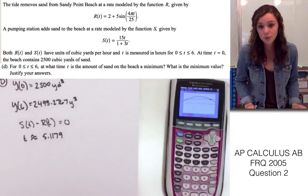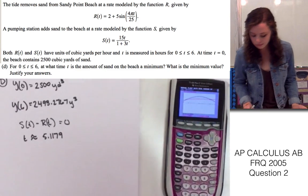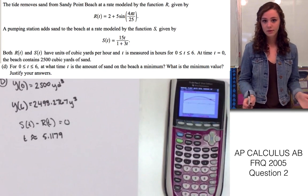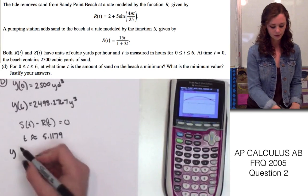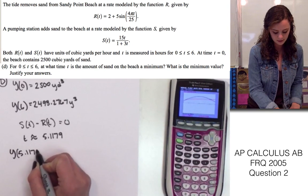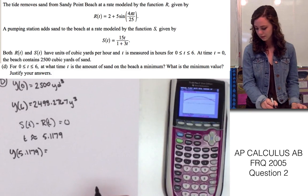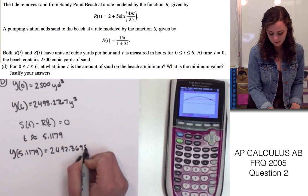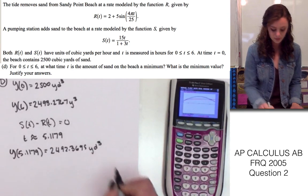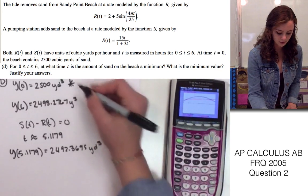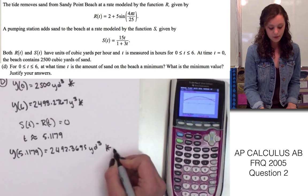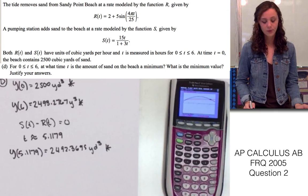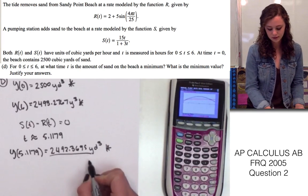When we look at the graph, we see that there's only one point of intersection. It looks really close here, but they aren't intersecting. So, there's only one critical number within our boundaries. Now that we found the critical number, let's plug that back in for y of t. We're going to have y of 5.1179. And when we plug that back into the equation, we end up with 2,492.3695 yards cubed. Now that we have all three values that we're comparing, which are y of 0, y of 6, and y of 5.1179, we can see that y of 5.1179 actually did end up giving us the smallest value.